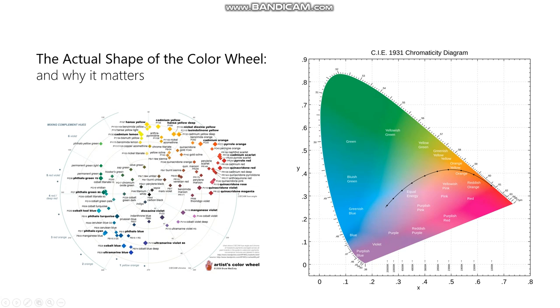When you realize this shape, it helps you in terms of color mixing and thinking about those things. But both the chromaticity diagram and the color wheel have another flaw, which is they both think of color in two dimensions.